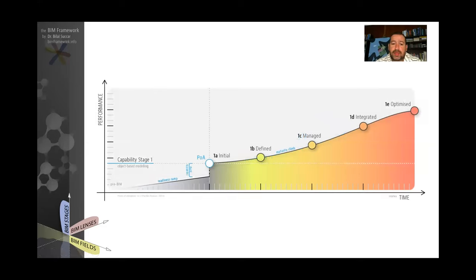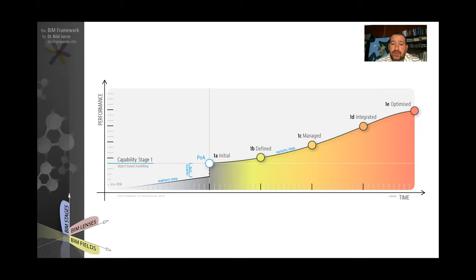The point of adoption is where before there was no capability and now we have capability. It doesn't mean this capability is great or will provide high-quality deliverables. To increase quality, repeatability, and predictability, we need to introduce the third concept: maturity. After readiness and a capability jump, we need a maturity increase in performance. Please refer to the maturity levels video for detail. In maturity levels there are five: initial, defined, managed, integrated, and optimized.